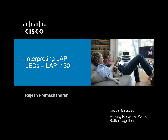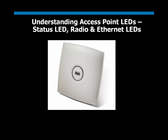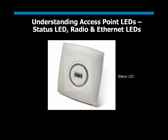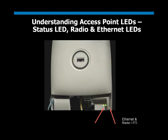In this video, we'll look at how to interpret the LEDs on a 1130AG Lightweight Access Point. LEDs on an access point give valuable information for troubleshooting purposes and to understand the process that happens inside the Lightweight Access Point. The 1130AG Lightweight Access Point has three LEDs: the status LED on the top of the unit, and the radio and Ethernet LED in the cable bay area.